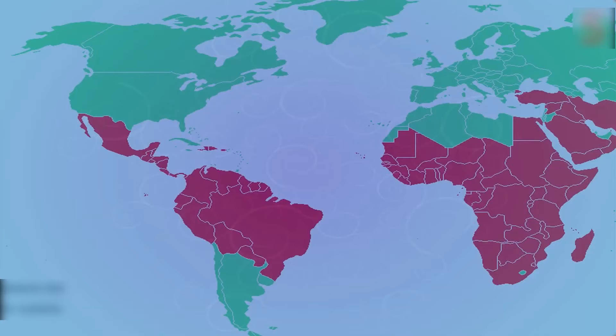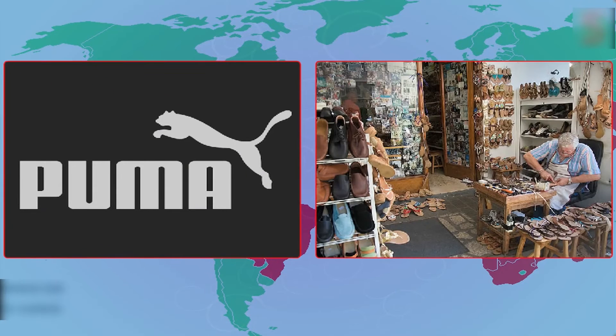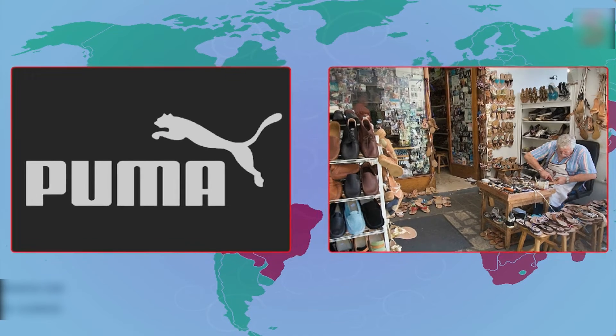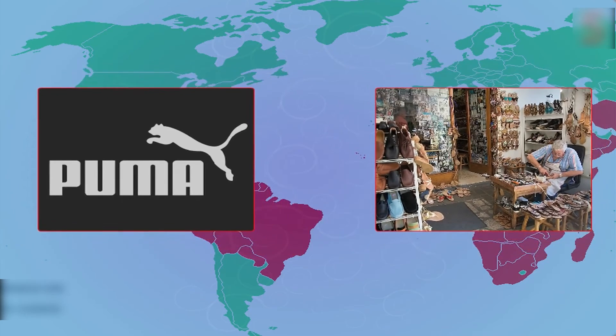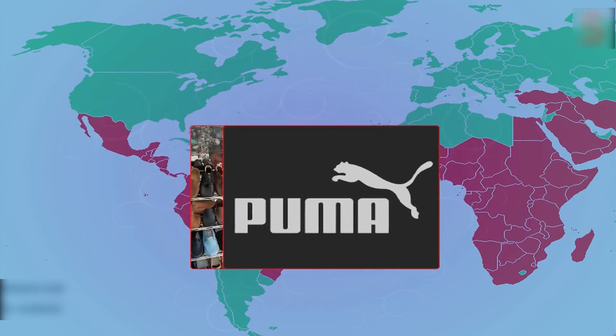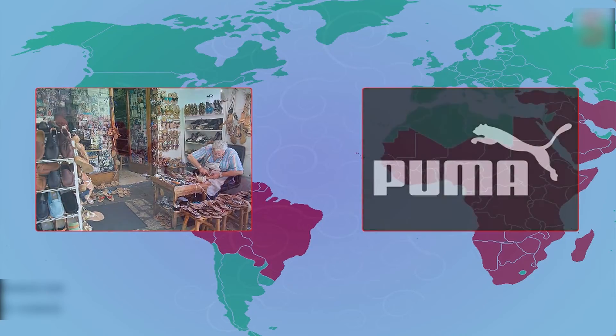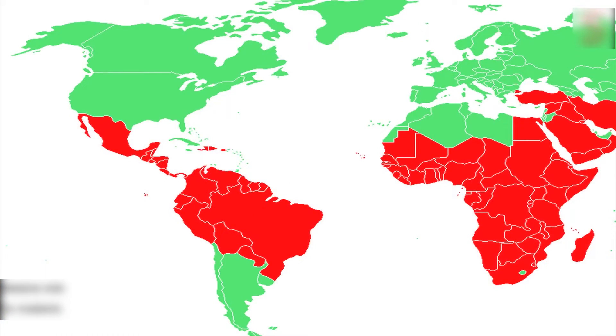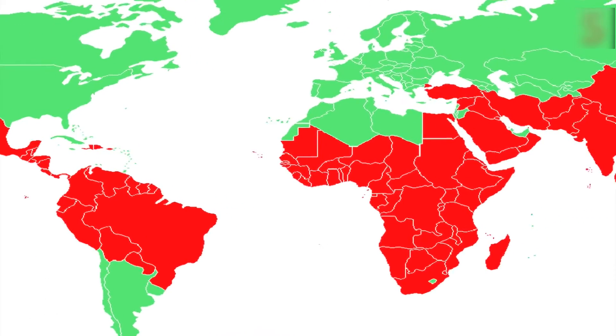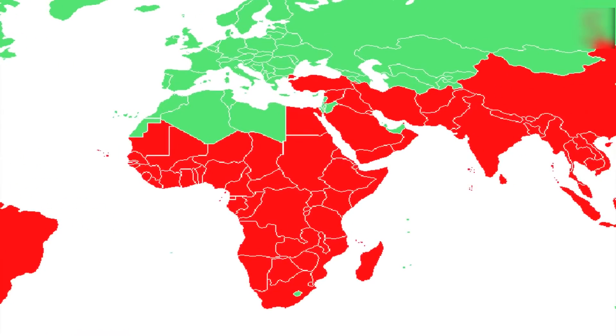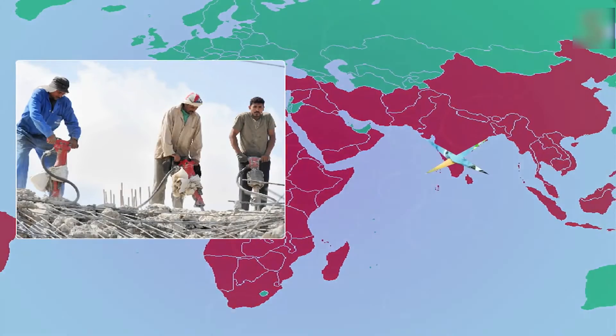The various ways in which MNCs set up or control production in other countries include buying out domestic companies or making them work for the MNC. Sometimes MNCs mass produce goods of domestic industries and sell them under their own brand name at much higher rates in foreign countries. MNCs look towards developing nations to set up trade because labor and manufacturing costs are much lower there.